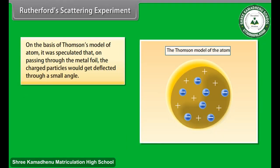The motion of charged particles incident on the foil was expected to get influenced in different ways depending upon distribution of positive and negative charges and mass within the atoms. On the basis of Thompson's model of atom, it was speculated that on passing through the metal foil, the charged particles would get deflected through a small angle.